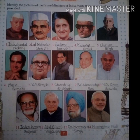Picture number 12 is Atal Bihari Vajpayee. He was an Indian statesman who served three terms as the Prime Minister of India: first for 13 days in 1996, then for a period of 13 months from 1998 to 1999, followed by a full term from 1999 to 2004.